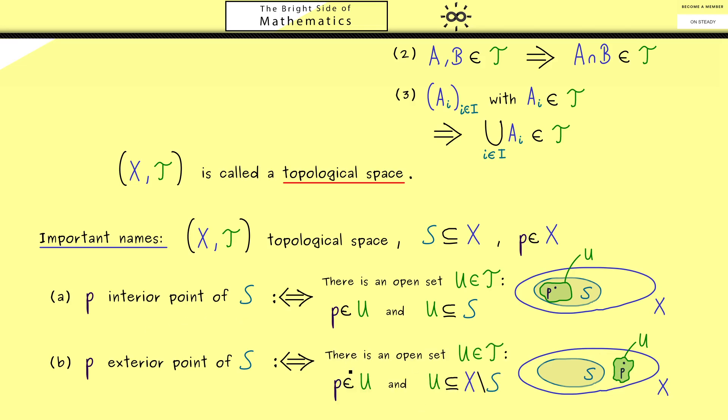Therefore, this exactly means that p is an interior point of the complement of S. Or with the same formula as before, we find an open set U such that p is an element of U and U is a subset of X without S.